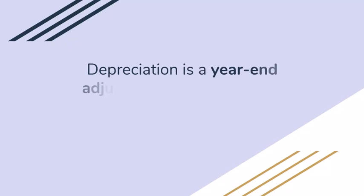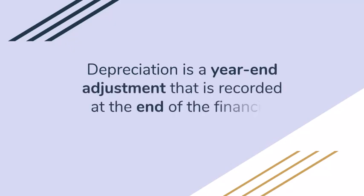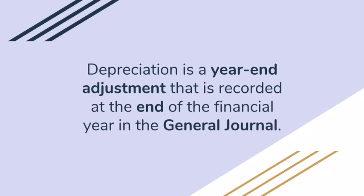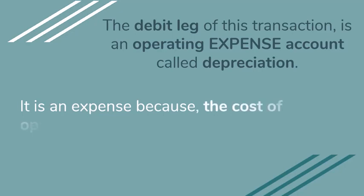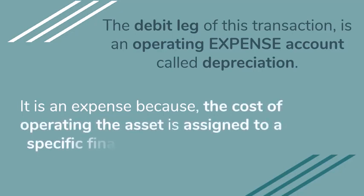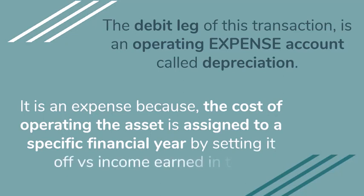So we all know that depreciation is a year-end adjustment — in other words, we only record these transactions at the end of the financial year, and the journal in which it will be recorded is the general journal. The debit leg of this transaction is an operating expense called depreciation, and the reason why depreciation is an expense for the business is because the cost of operating the asset is assigned to a specific financial year, and then we'll set off this cost of using the asset in this financial year against the income of this year in the income statement.